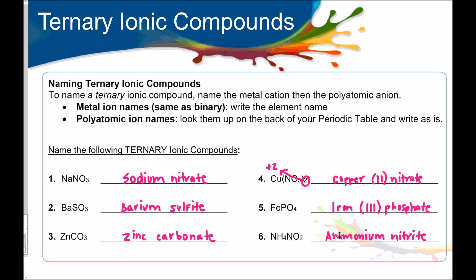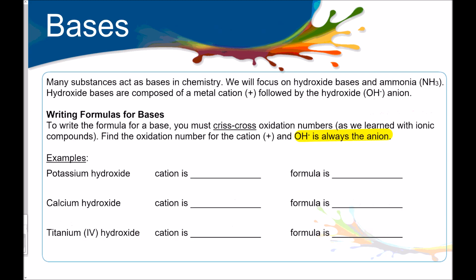Again, if you need help, pause the video, ask your teacher for help. If not, let's move on. Next we're going into bases. Many substances act as bases in chemistry. We will focus on hydroxide bases and ammonia. You've got to have that one memorized. Hydroxide bases are composed of a metal cation followed by the hydroxide anion. These are always going to be ternary because of that hydroxide being a polyatomic ion. That's why I've included it in this video because the naming and the formula writing is pretty much just like ternary ionic compounds.